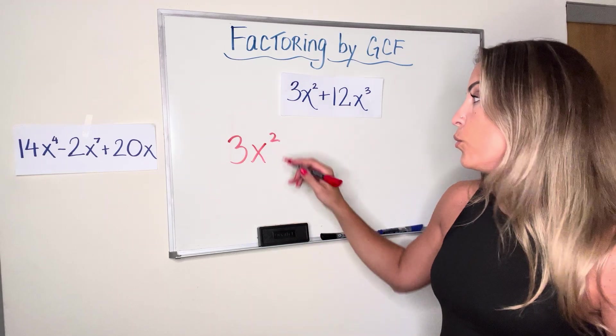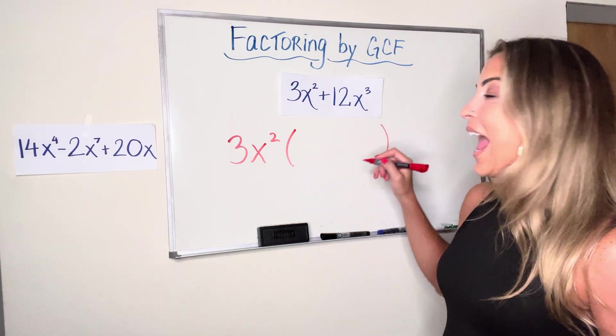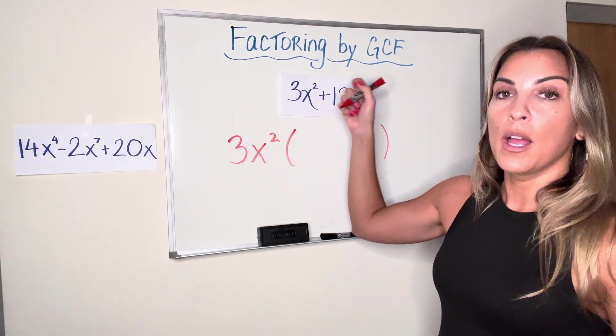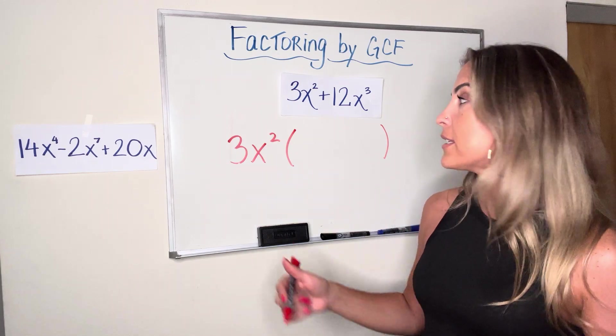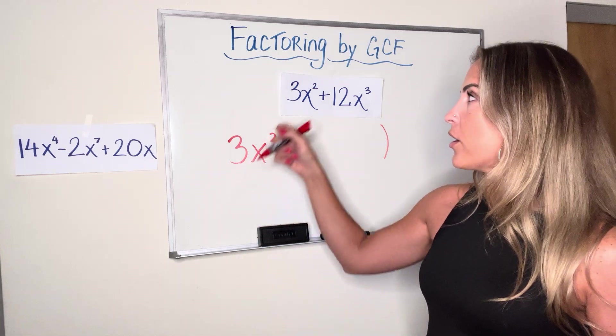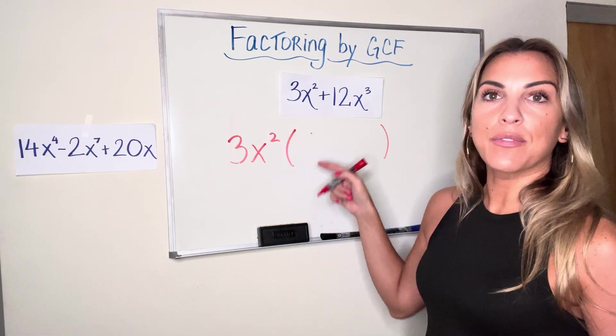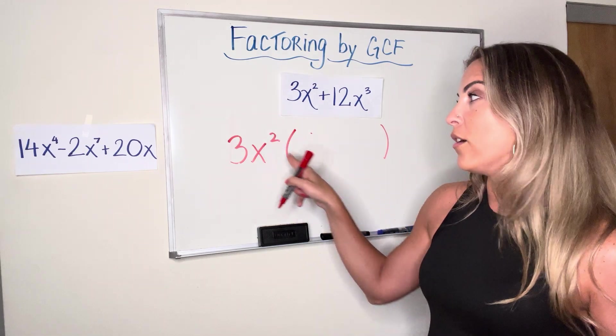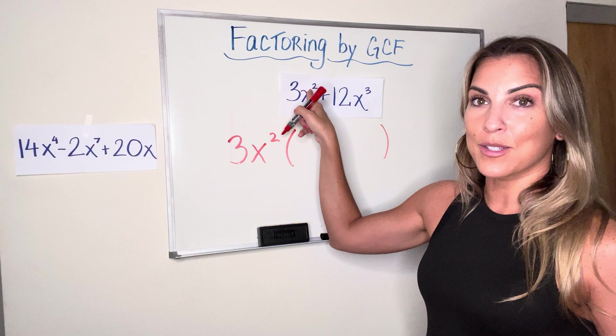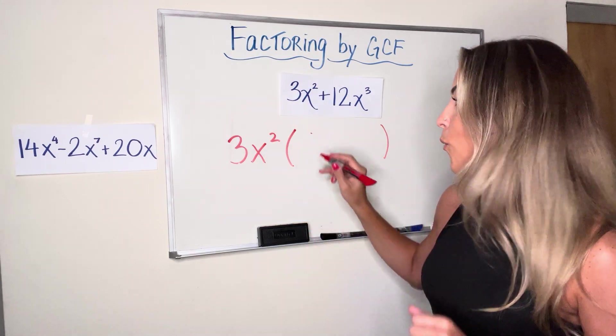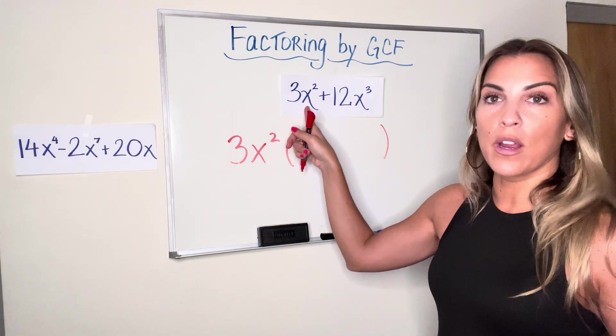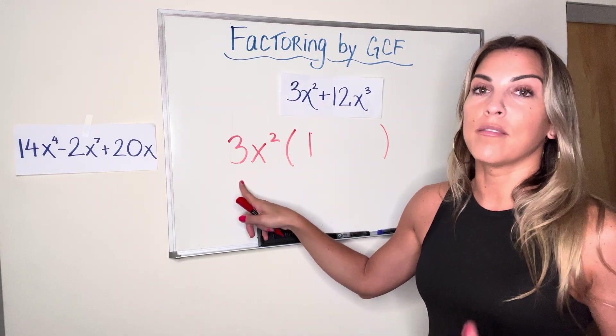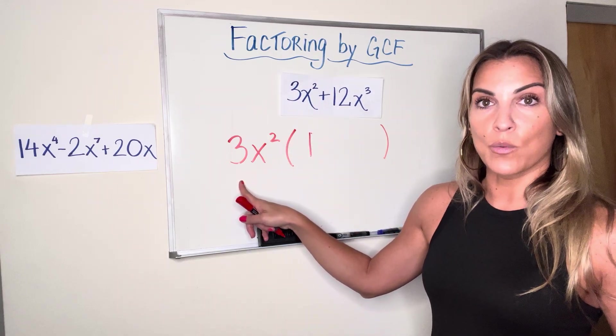And now I'm following that same step 2, which was we're going to open the parentheses and divide each term by the GCF. It's kind of like I'm just backwards distributing. I'm asking myself to get from 3x² to 3x², what would I have to multiply by? Well, if I have 3x², I need 3x². I only need to multiply by 1 because it's the same exact term. If you do by division, we're doing 3x² divided by 3x². That's 1. Anything divided by itself is 1.